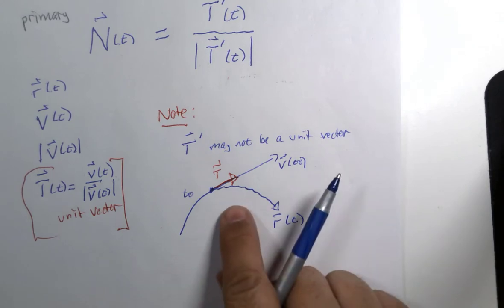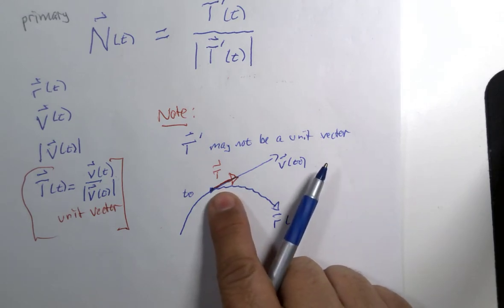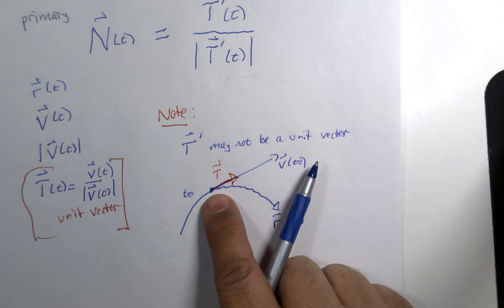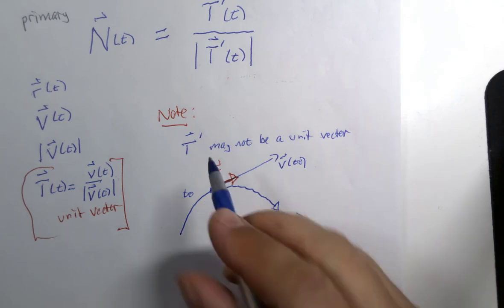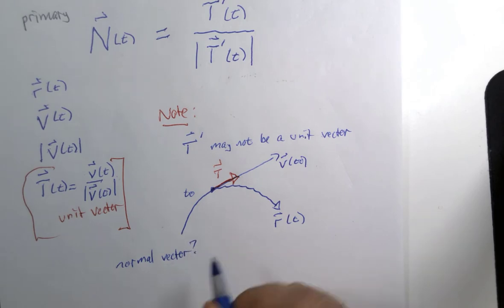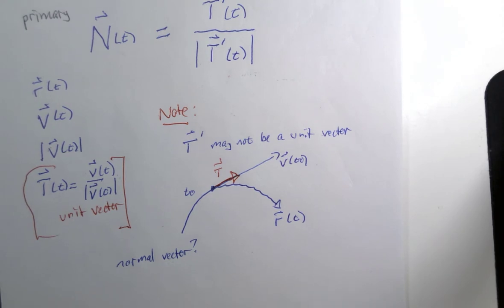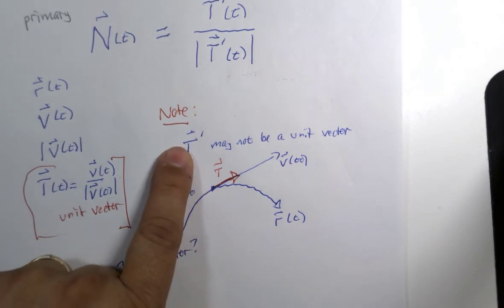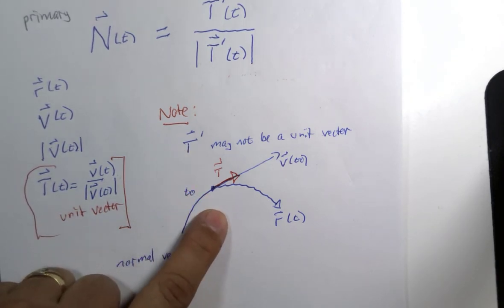Now I want you to imagine that you had to sketch a normal vector here. At this point we want a normal vector to that curve. Can you imagine on this paper drawing two different choices that are on the paper? One that goes this way and one that goes this way.